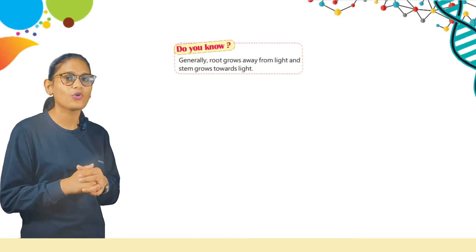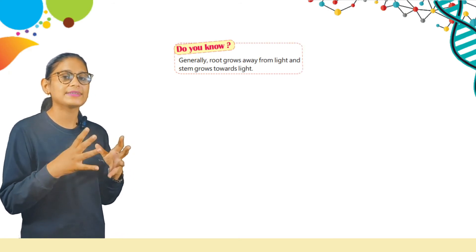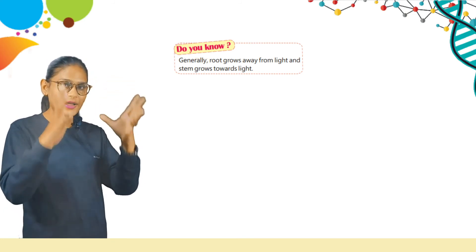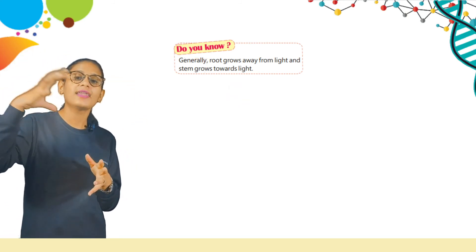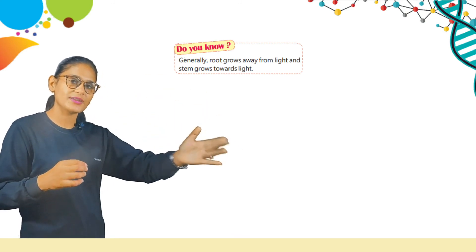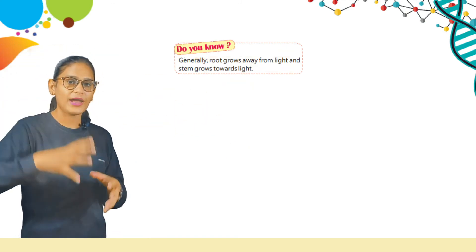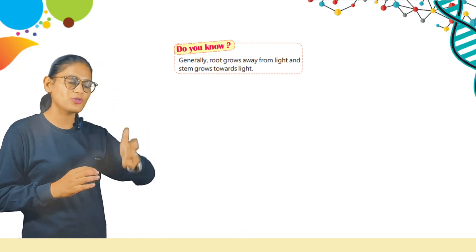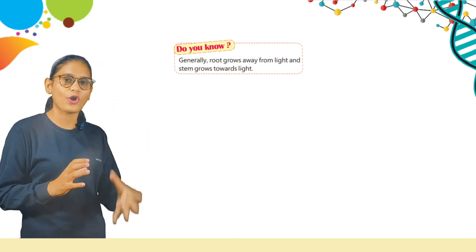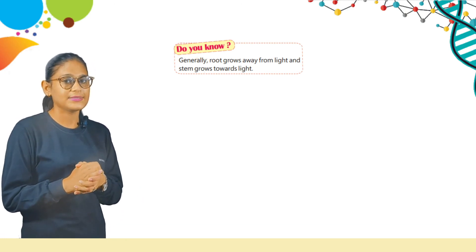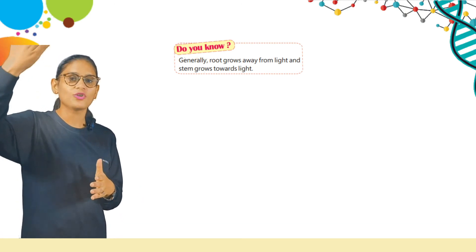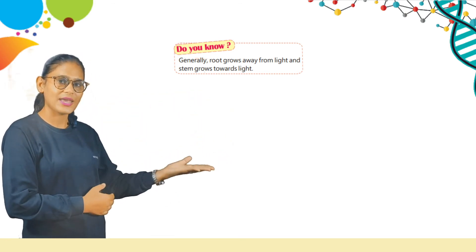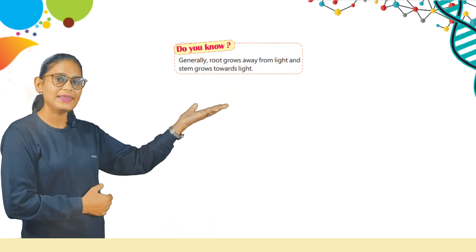Do you know? Generally, roots grow away from light and stems grow towards the light. That means, students, the root of a plant grows on the opposite side from where the light comes. For example, if light comes from the right side, the root will grow downward — away from the light. And since the stem gets light, it grows upward. Here is a picture showing roots, stem, fruits, and leaves.